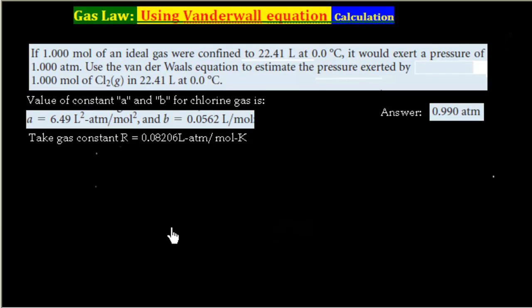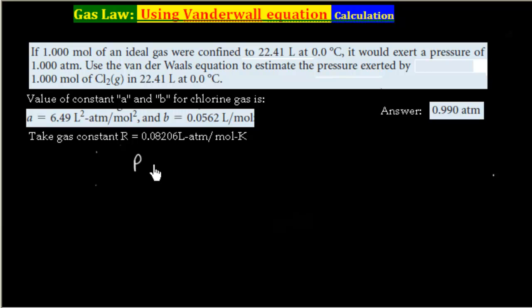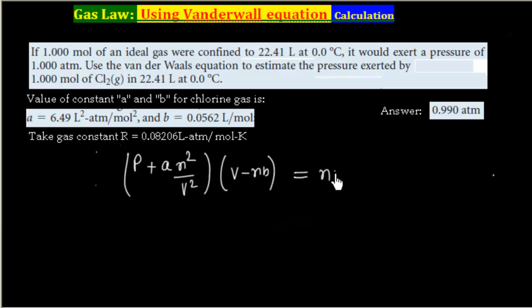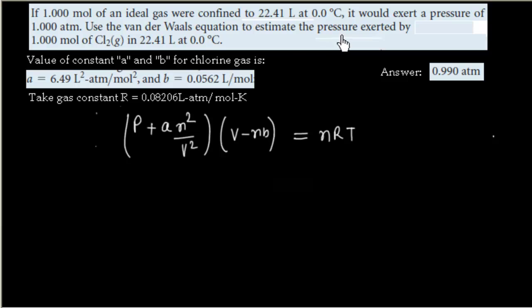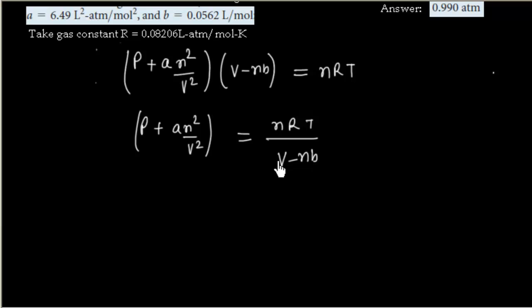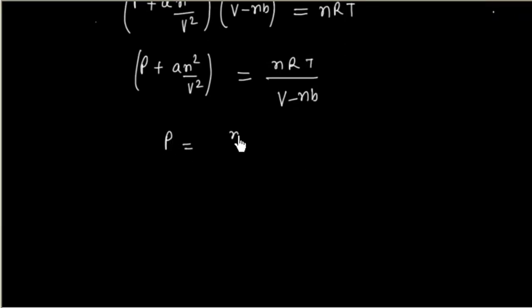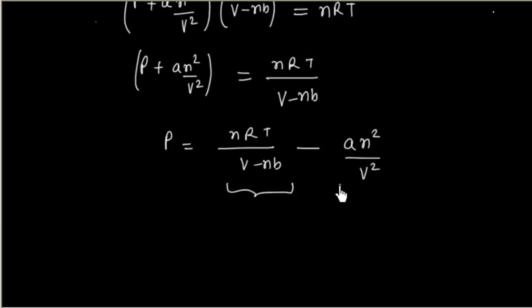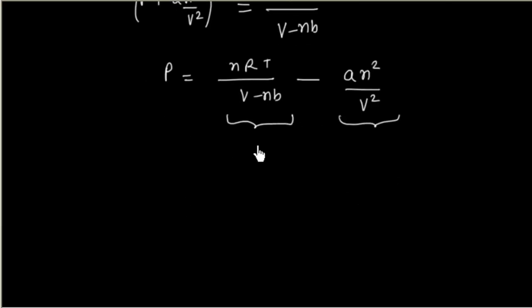We have to apply the Van der Waals equation: (P + AN²/V²)(V - NB) = NRT. We have to find pressure, so let us solve for pressure. We get P + AN²/V² = NRT/(V - NB), and therefore P = NRT/(V - NB) - AN²/V². So we have two terms: the first term and the second term. Let us calculate these two terms separately.